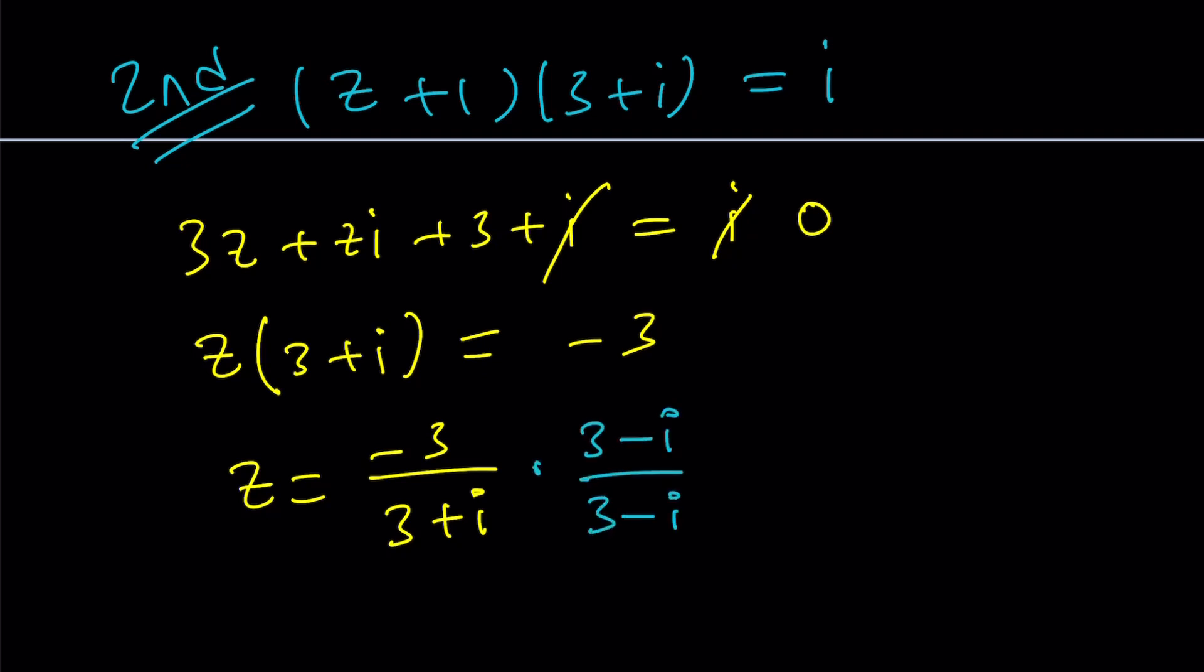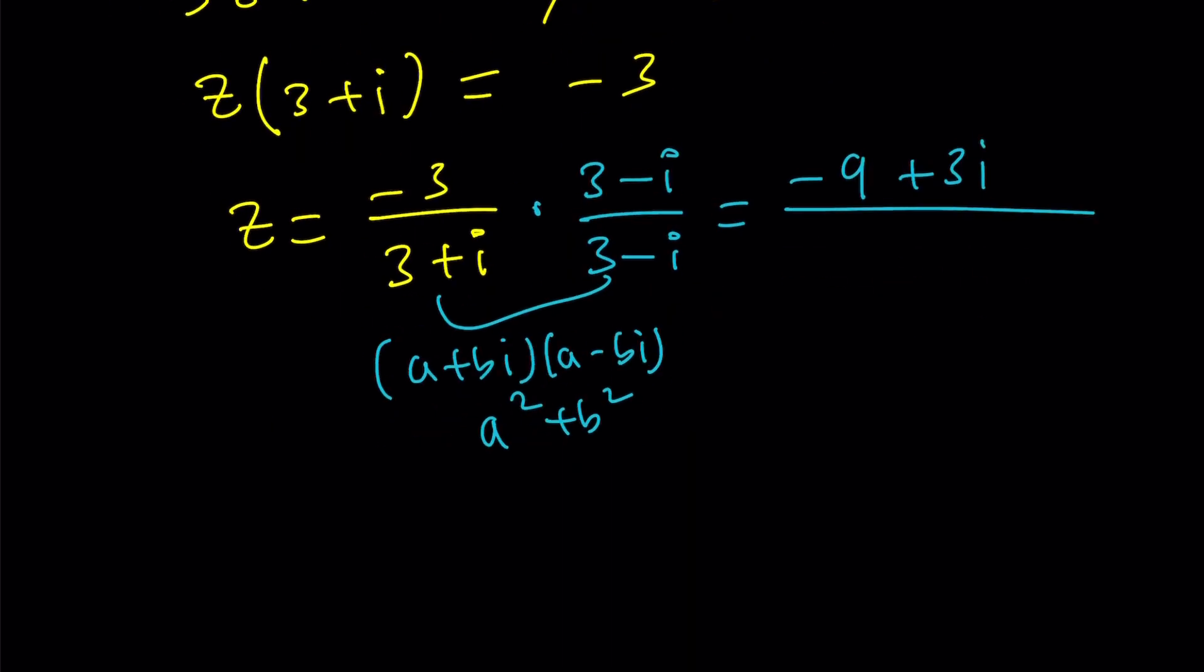That's going to give us negative 9 plus 3I divided by... Now, at the bottom, you have something like A plus BI and A minus BI. And remember, this gives you sum of 2 squares, not difference of 2 squares. So this is going to be 9 plus 1, which is 10.